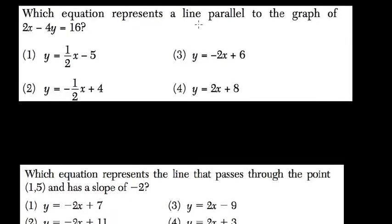Which equation represents a line parallel to the graph of 2x minus 4y equals 16? I'm just going to rewrite that so I can see it in slope-intercept form. So I'll have y all by itself. I'll add it to the right-hand side.